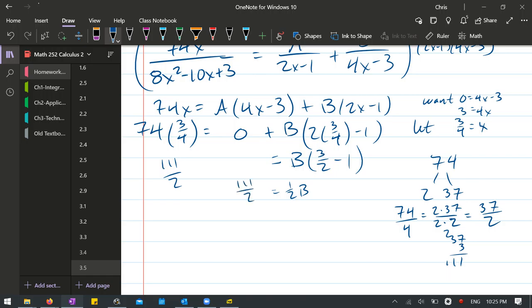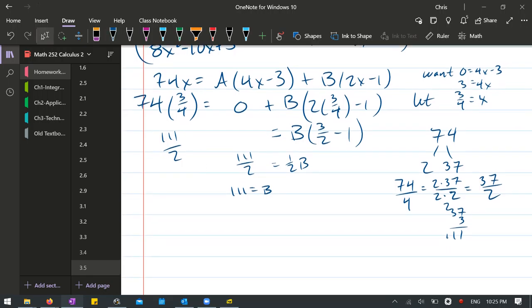So multiply both sides by 2. 111 equals B. Oh very nice. Alright, you can definitely plug that B value back in on the original here for B.